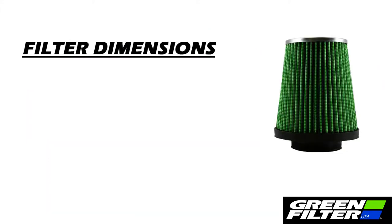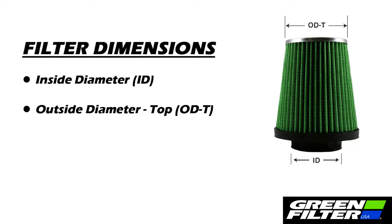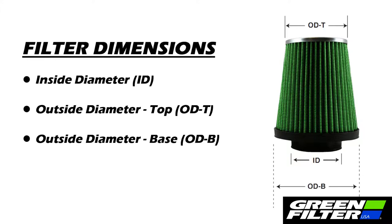The four dimensions that are crucial in selecting the proper filter are the inside diameter, or ID, the outside diameter top and outside diameter base, or ODT and ODB respectively, and the filter's height, or H.